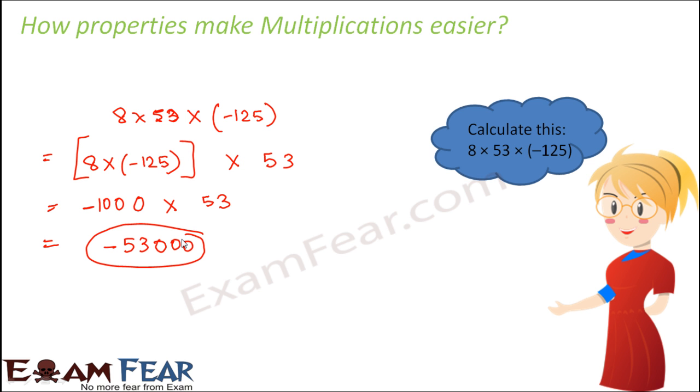So this is how these properties will make our multiplications easier. Let us look at another example. Find the product: -45 × 18. Now normally without making use of properties, how would you find this product?